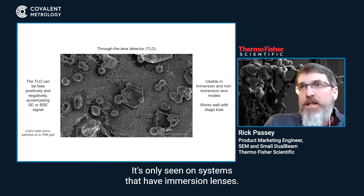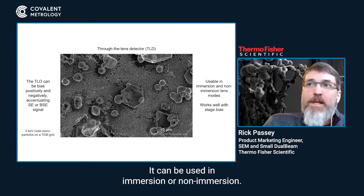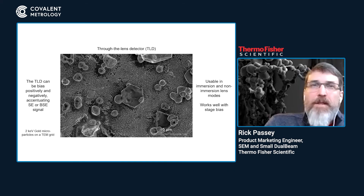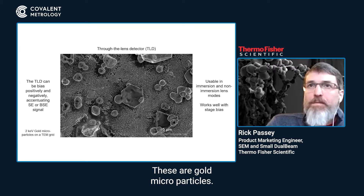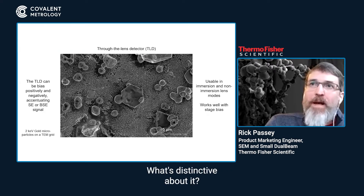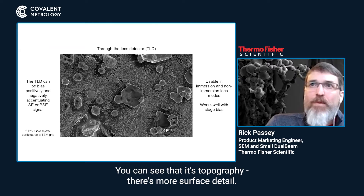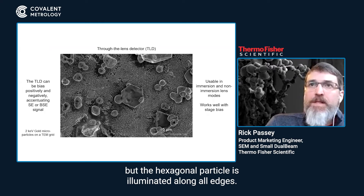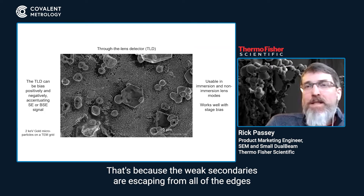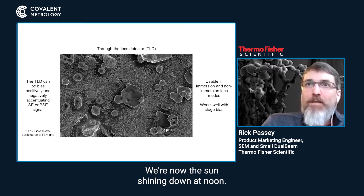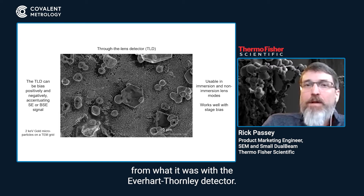It's only seen on systems that have immersion lenses, and it can be used in immersion or non-immersion mode. What it gives you is an image with great surface detail. These are gold microparticles — you can see the hexagonal particle in the middle. What's distinctive is you can see the topography, more surface detail. There's not a ton of atomic contrast, but the hexagonal particle is illuminated along all edges because the weak secondaries are escaping from all edges and being pulled directly up the column. We're now like the sun shining down at noon, so our perspective on the sample has changed from what it was with the Everhart-Thornley detector.